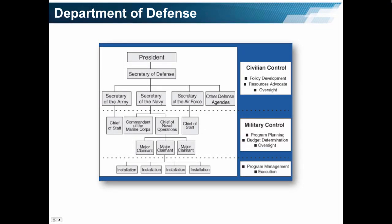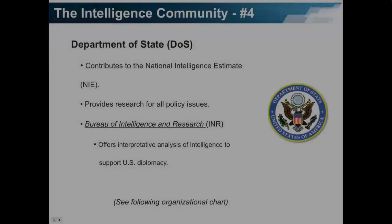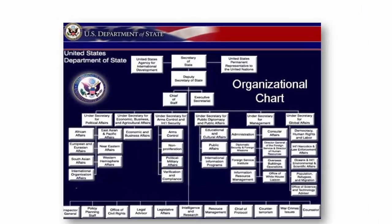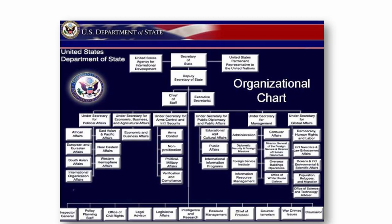Here is the diagram of the organization of the Secretary of Defense. The Department of State contributes to the National Intelligence Estimate, the NIE, and provides research for all policy issues. Within the State Department, there is the Bureau of Intelligence and Research, which offers interpretative analysis of intelligence to support U.S. diplomacy. Here is the organizational chart of the Department of State.